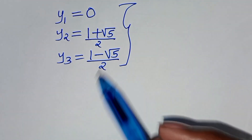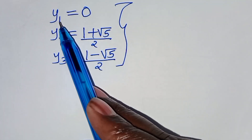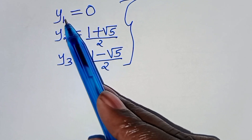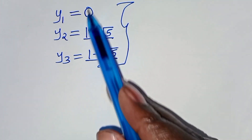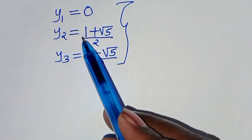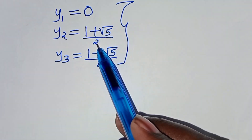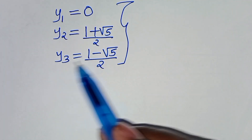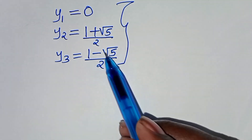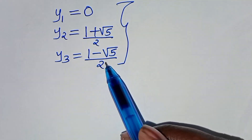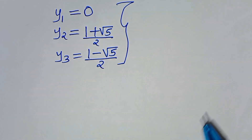Now, we have three values of y: y₁ equals 0, y₂ equals 1 plus square root of 5 over 2, and y₃ equals 1 minus square root of 5 over 2.